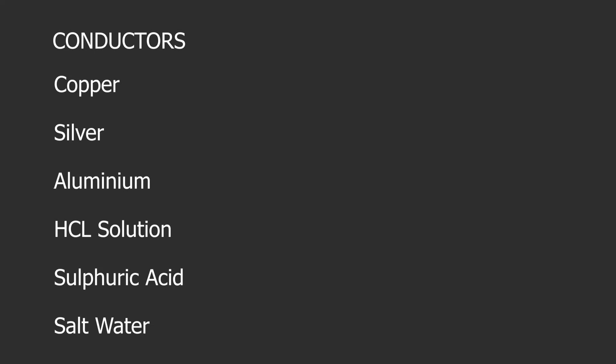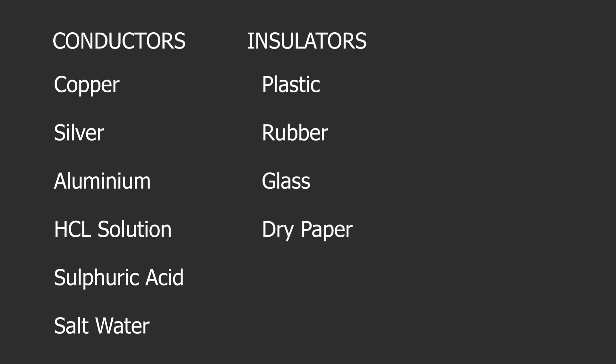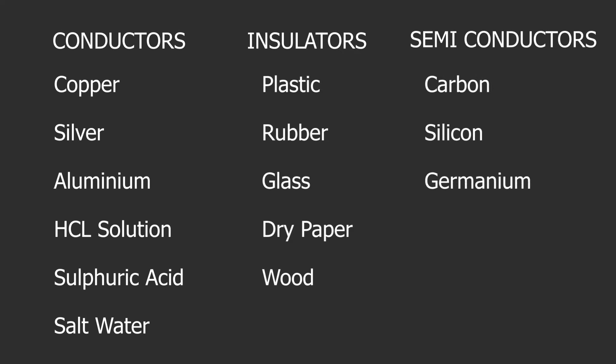In contrast, materials which allow few electrons to flow are called insulators, such as plastic, rubber, glass, dry paper, and wood. Another type of material, semiconductors, have characteristics of both conductors and insulators. They allow electrons to move while being able to control the flow of electrons; examples are carbon, silicon, and germanium, etc. The resistance of a conductor depends on two main factors: types of material and temperature of material.